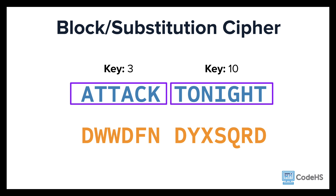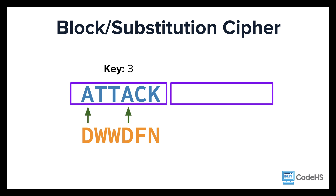You can see in the first block that A has become the letter D. But in the second block, the letter T has become the letter D. If someone tries to crack the code and only figures out the first key, they can only decipher one half of our message.